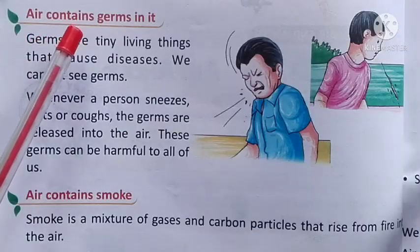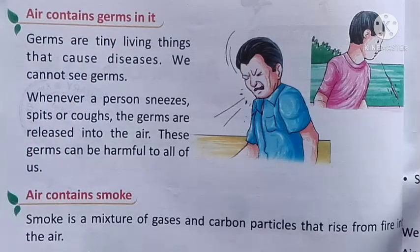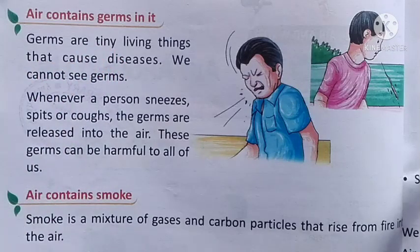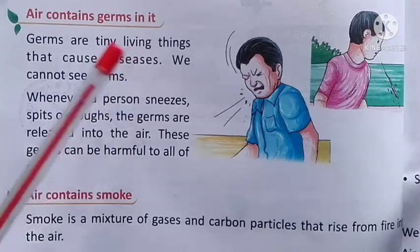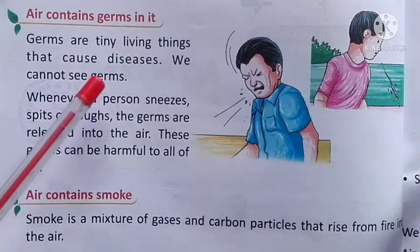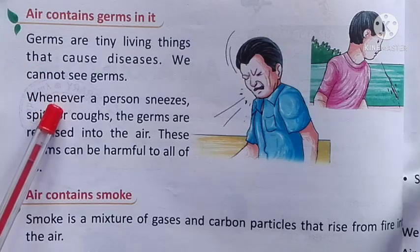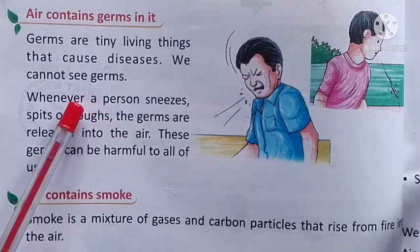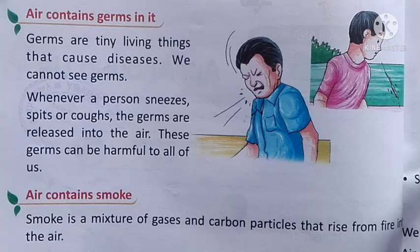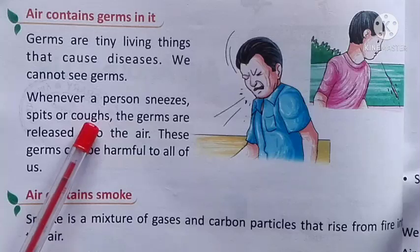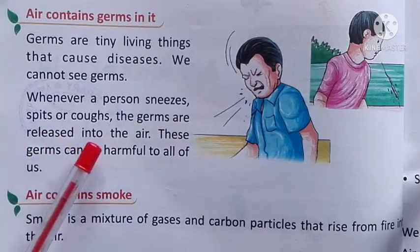Another one is — air contains germs. हवा में रोगाणु होते हैं। Germs are tiny living things that cause diseases. रोग पैदा करने वाले कीटाणु बहुत छोटे होते हैं। We cannot see germs — हम उन कीटाणुओं को नहीं देख सकते। Whenever a person sneezes, spits, or coughs, the germs are released into the air.